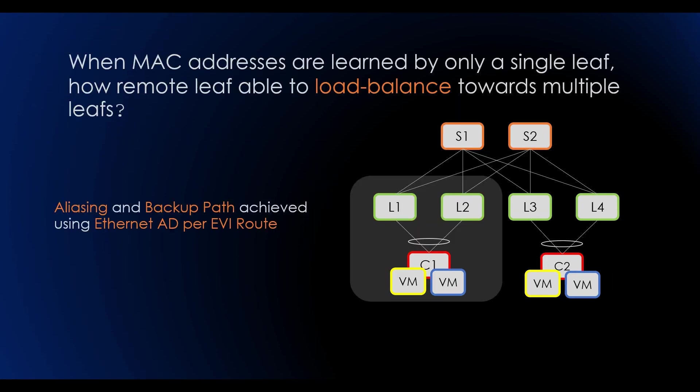When MAC addresses are learned by only a single leaf, how the remote leaf is able to load balance towards multiple leaves is done using Ethernet AD per EVI route. The Ethernet AD per EVI route is being used for aliasing and backup path.